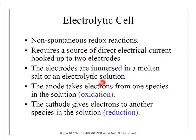The anode in the solution is going to be the one that takes the electrons from the species in solution — so the anode takes away electrons. The cathode, on the other hand, is going to give away electrons. This is a little backwards from the galvanic cell: in a galvanic cell, the anode loses electrons and the cathode takes those electrons.